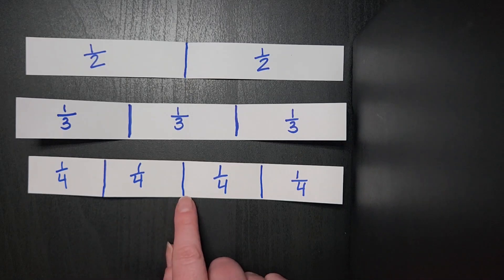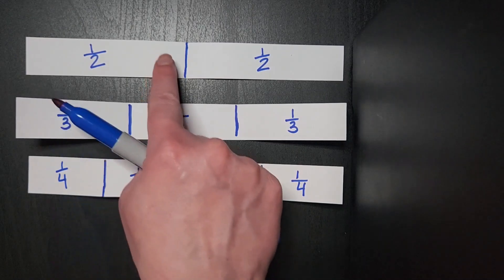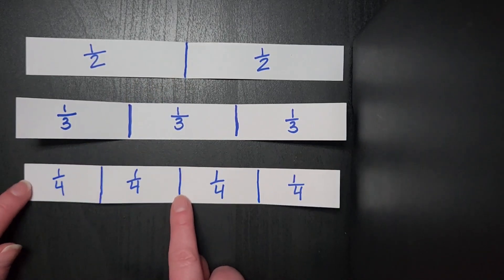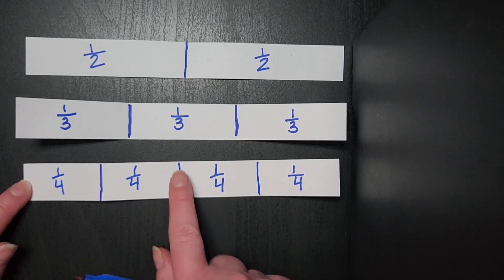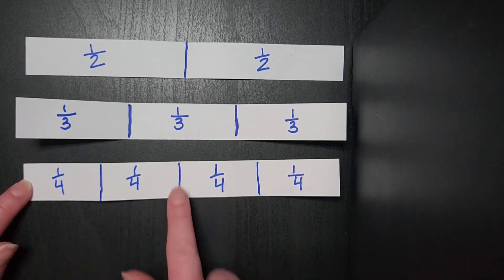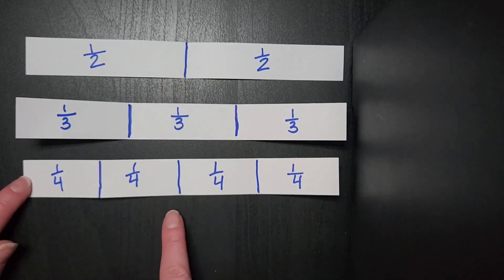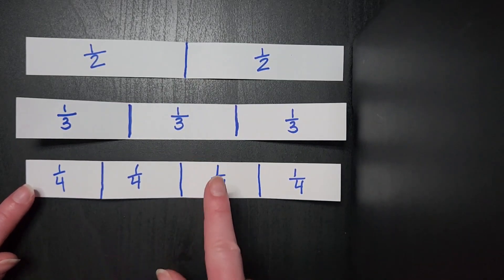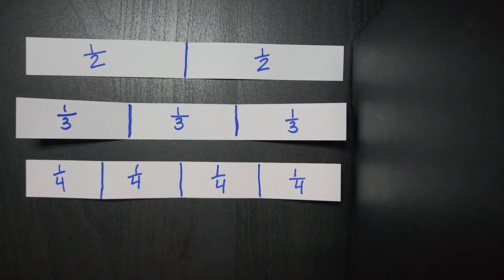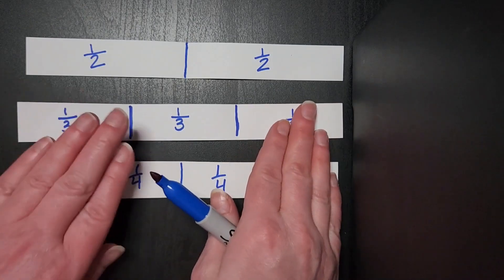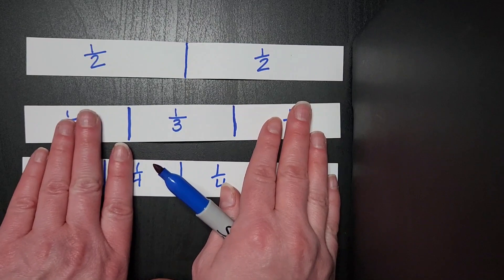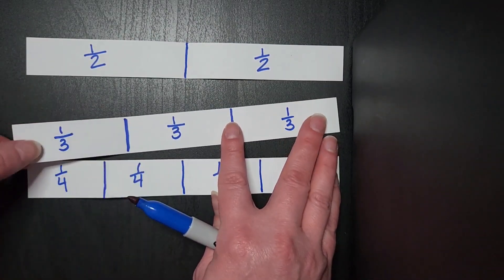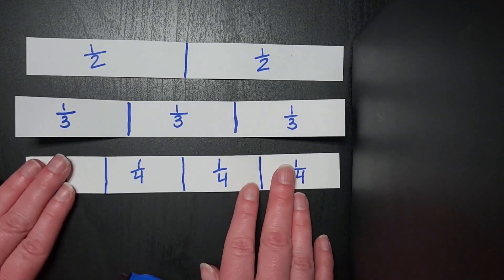We also talk about how two fourths are equivalent to one half. And we can tell that because of this line. And so we talk about how, because the denominator is even, I am able to kind of find that middle, cut it in half, and it would line up there. When we glue these down, we are super careful to line up that middle, and then those pieces on the end, which is why I always prep these in advance. I know right now they're not looking 100% precise, but I'm more meticulous about it when I am cutting the pieces with my students.